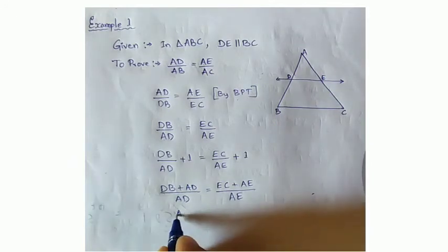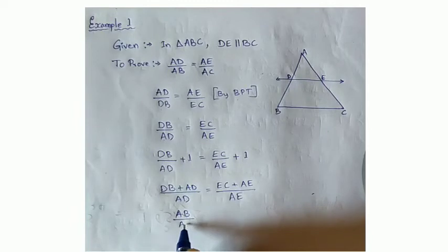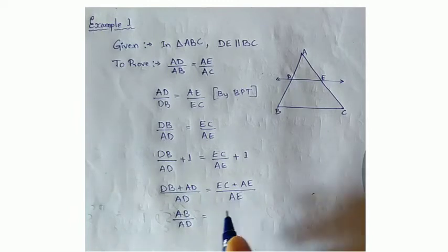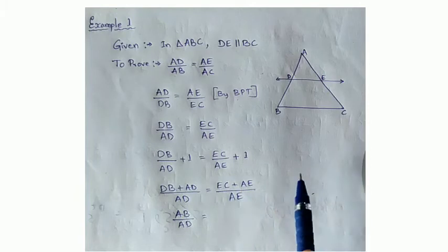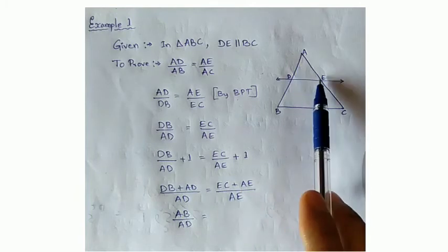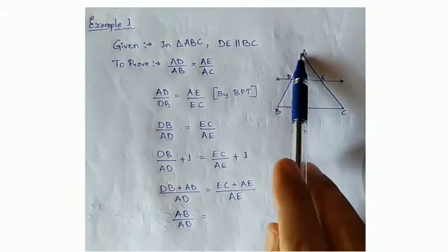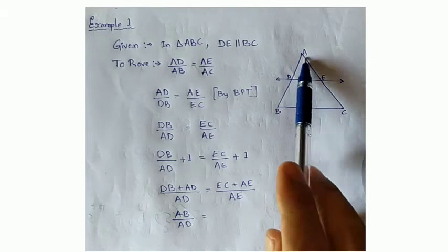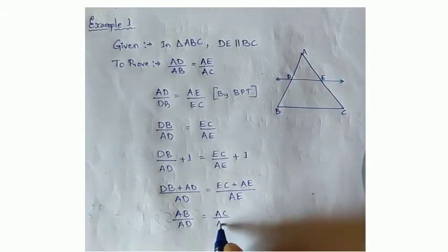Taking the LCM, it becomes DB plus AD whole divided by AD, equal to EC plus AE whole divided by AE. Now, DB plus AD — if you add these two you will get totally AB. So write here AB by AD. Similarly, EC plus AE gives the total side that is AC. So here it is AC by AE.